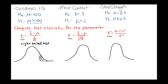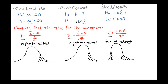Similarly, p greater than 0.2 is also a right-tailed test. If we had a value less than a number, that would be a left-tailed test, going off to the left-hand side of the graph. This last one — sigma not equal to 0.7 — is a two-tailed test. If you don't have an inequality pointing one way or the other, you'll have two tails on both the right and left-hand side.